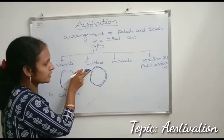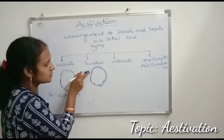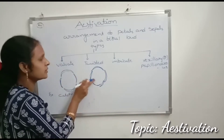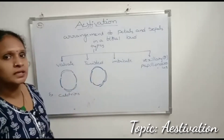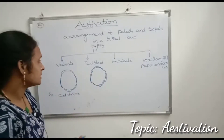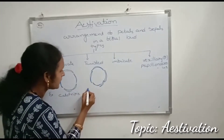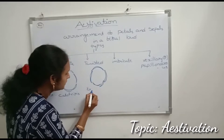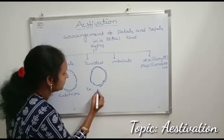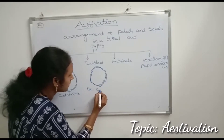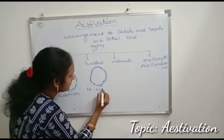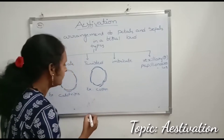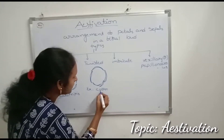One margin of the petals or sepals overlaps the next one. This type of estivation is called twisted estivation. Examples of twisted estivation are cotton and lady's finger.